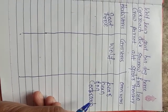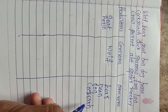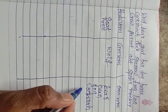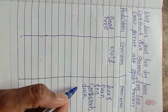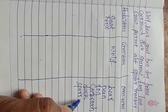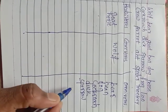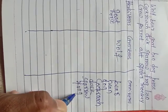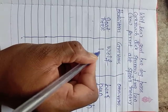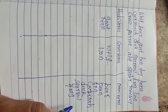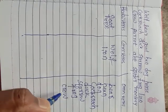Cockroach is omnivorous because it eats some small insects as well as plant parts. Duck is also omnivorous. Sparrow is also omnivorous because it eats grains as well as some insects. Frog is also omnivorous. Lion is not omnivorous — lion is carnivorous because it eats only animals.